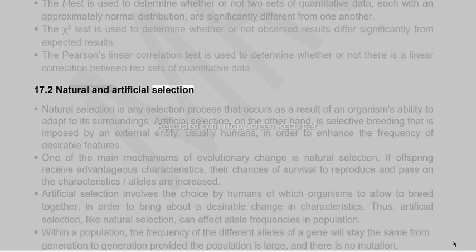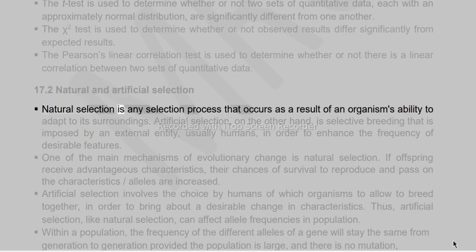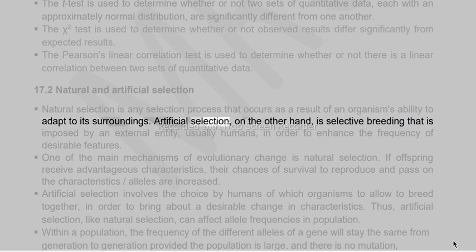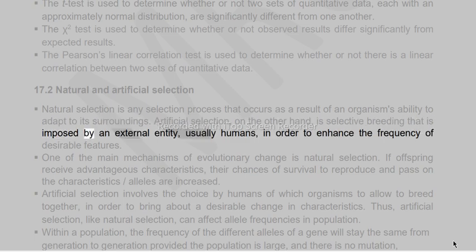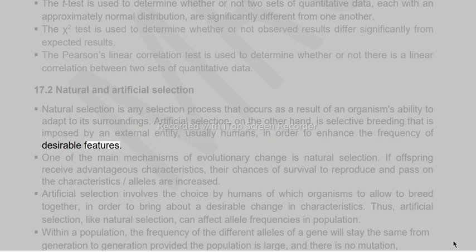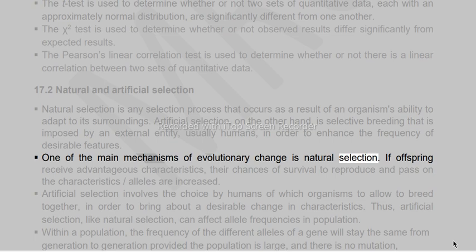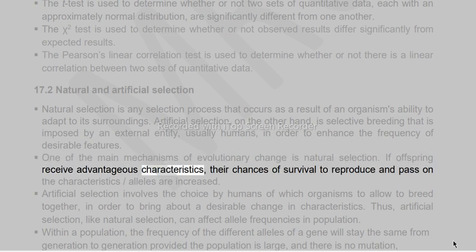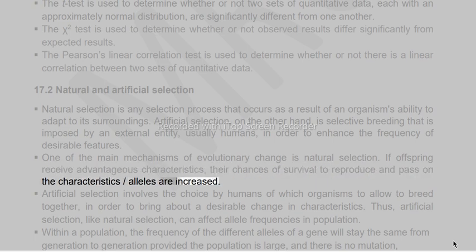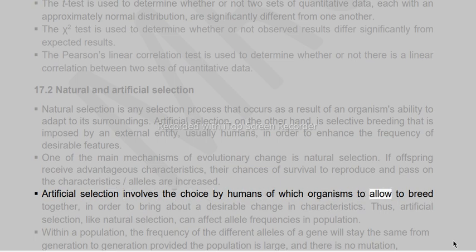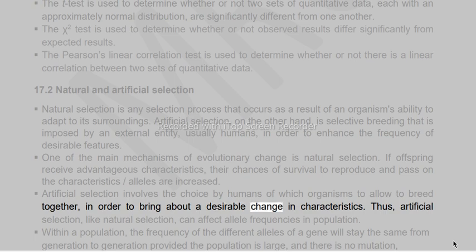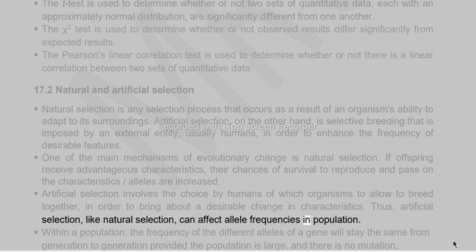Natural selection is any selection process that occurs as a result of an organism's ability to adapt to its surroundings. Artificial selection is selective breeding imposed by an external entity, usually humans, to enhance the frequency of desirable features. Artificial selection involves the choice by humans of which organisms to allow to breed together in order to bring about a desirable change in characteristics. Like natural selection, artificial selection can affect allele frequencies in a population.